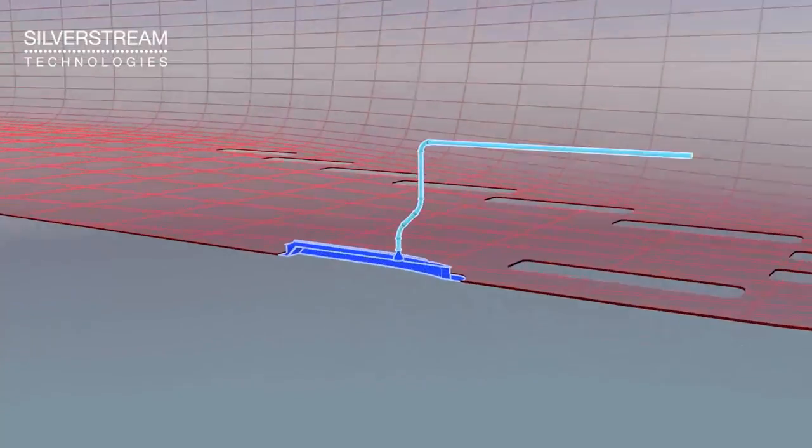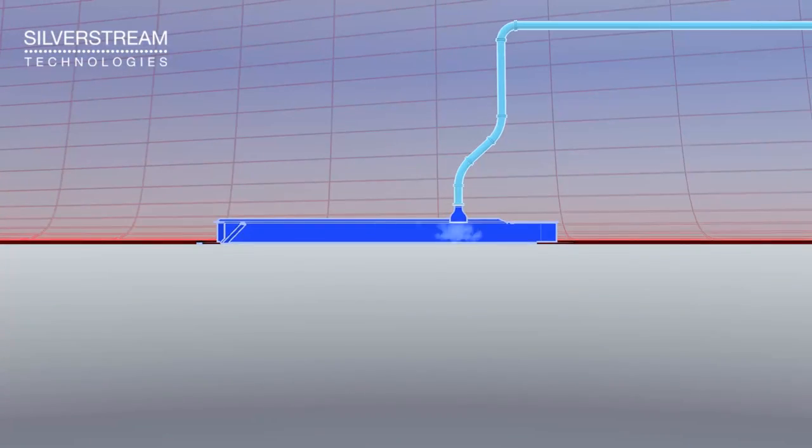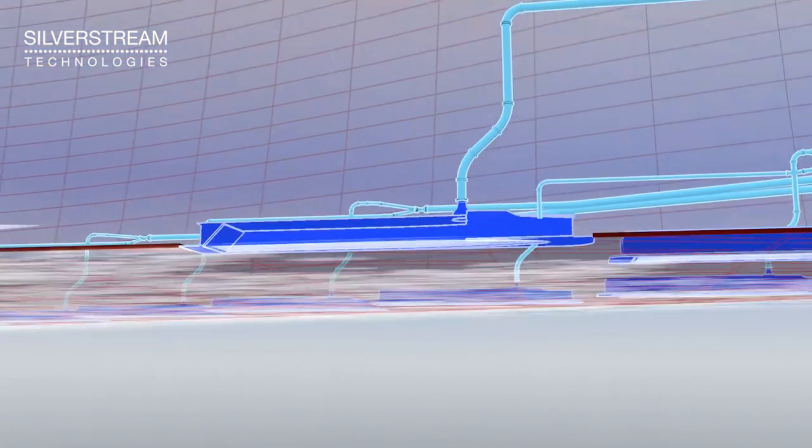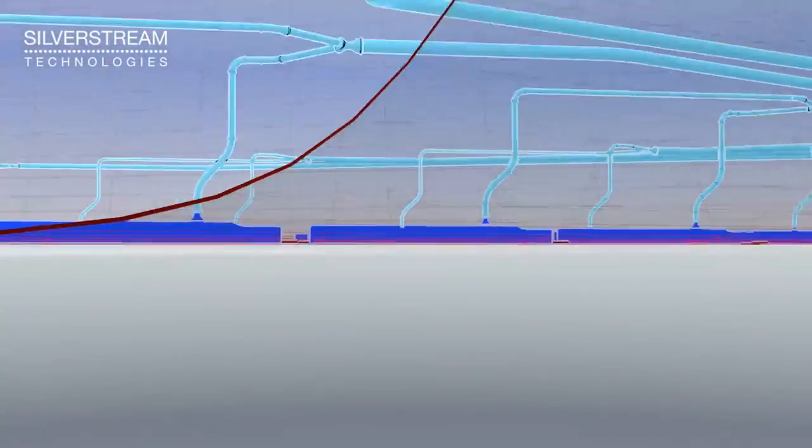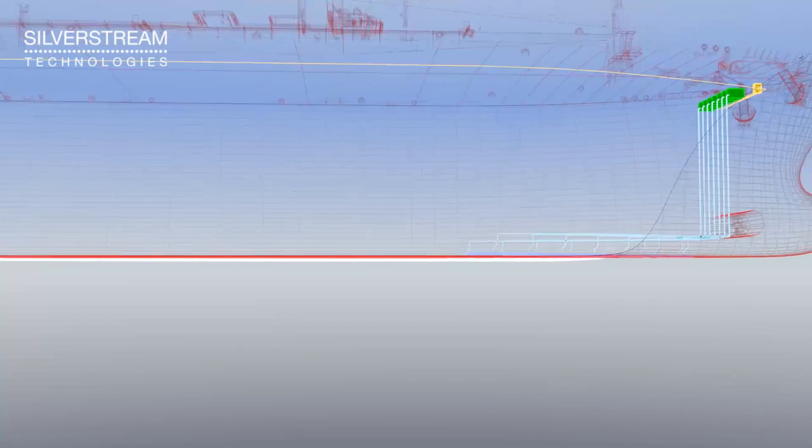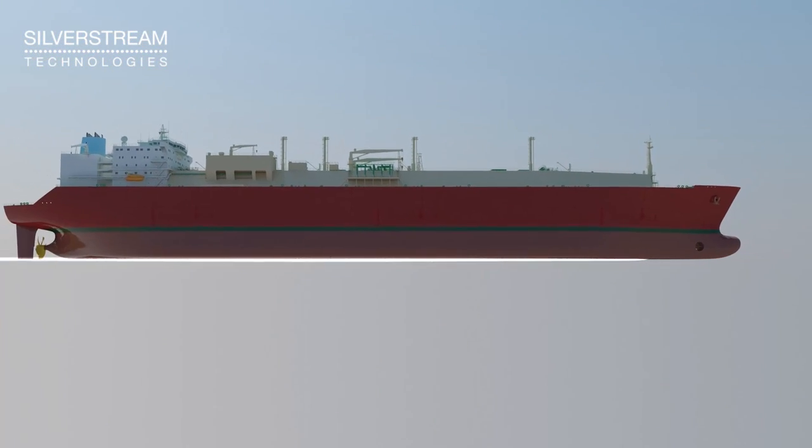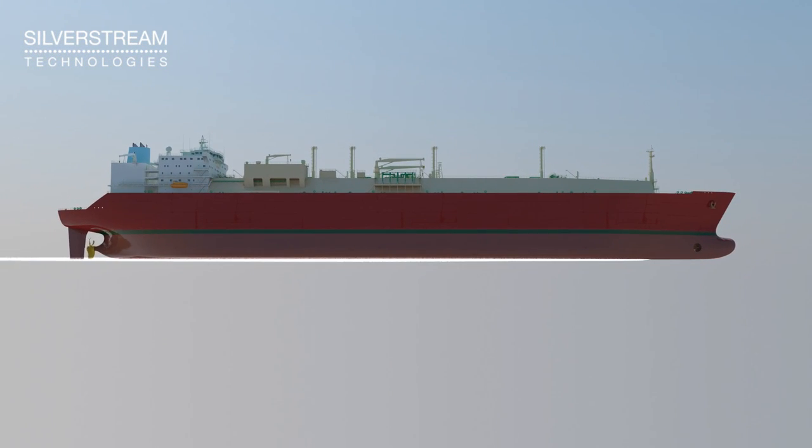The compressed air fills the air release units and is released into the boundary layer as micro-bubbles. This helps the vessel glide through the water with reduced resistance. The air carpet covers the full bottom of the vessel and remains in the boundary layer for the entire length of the vessel.